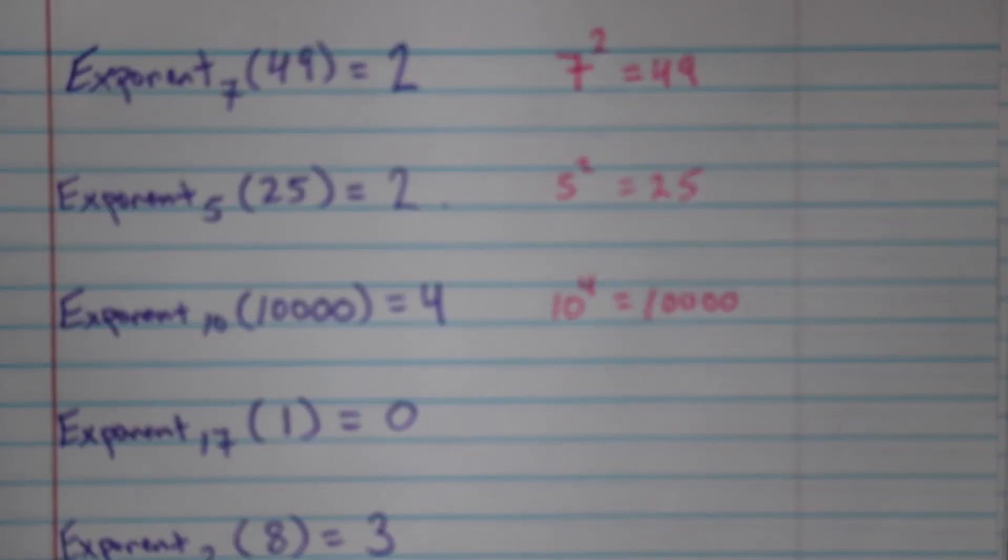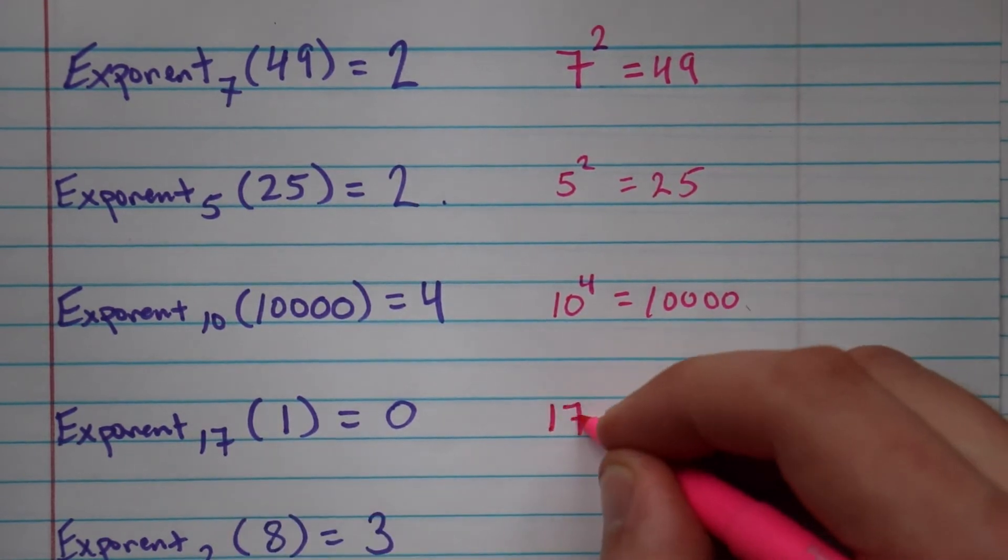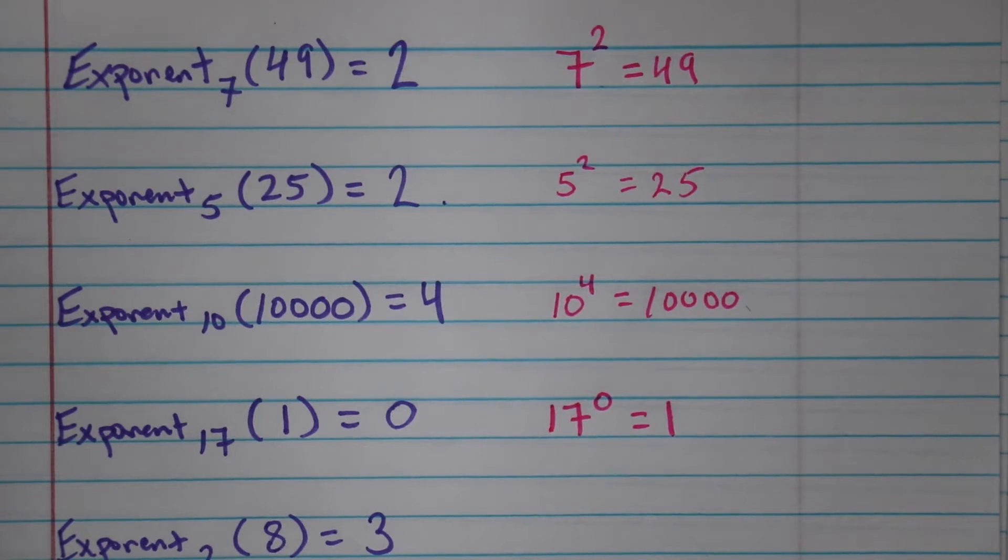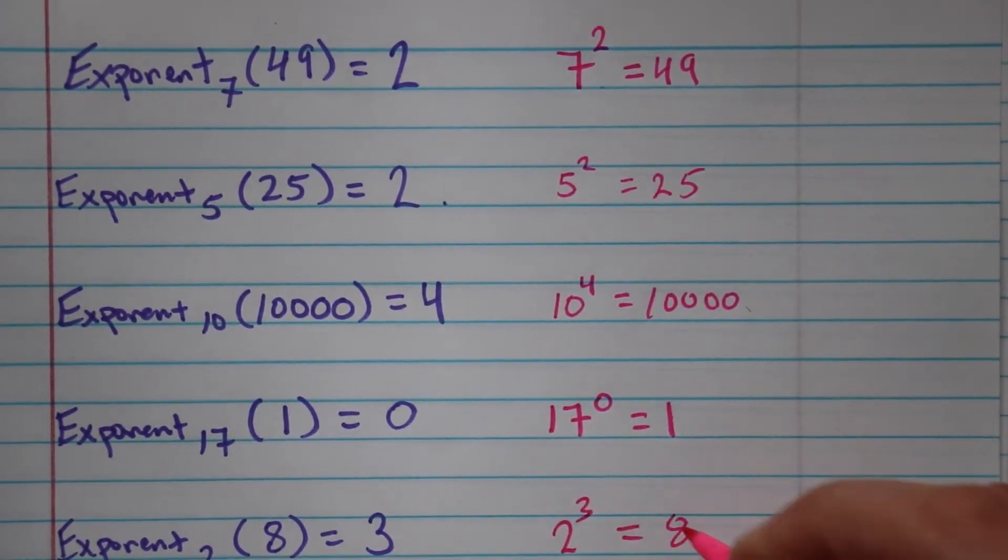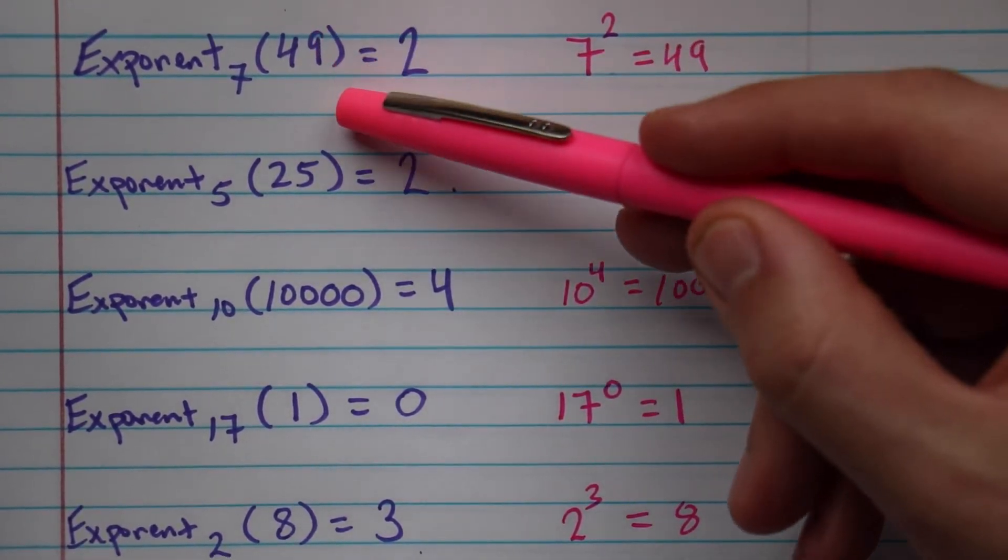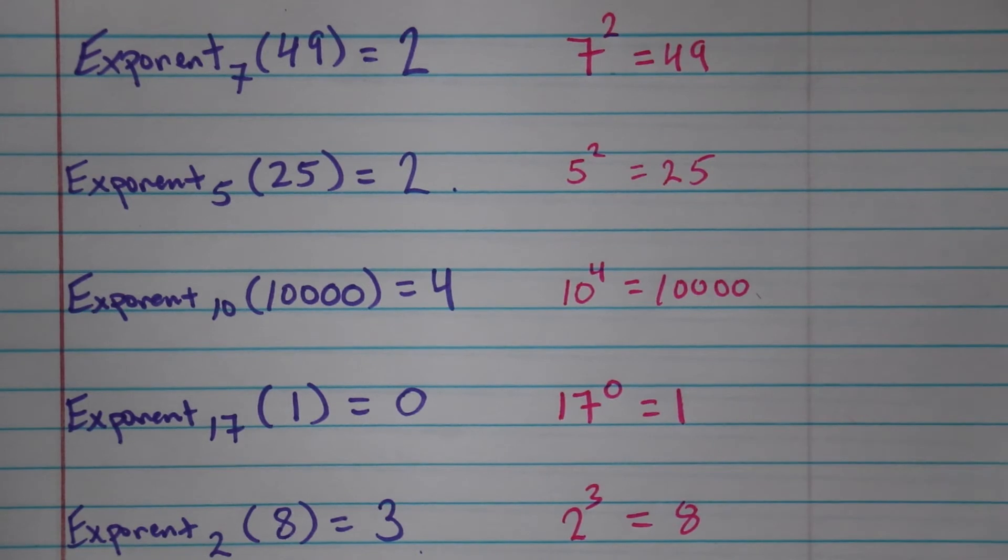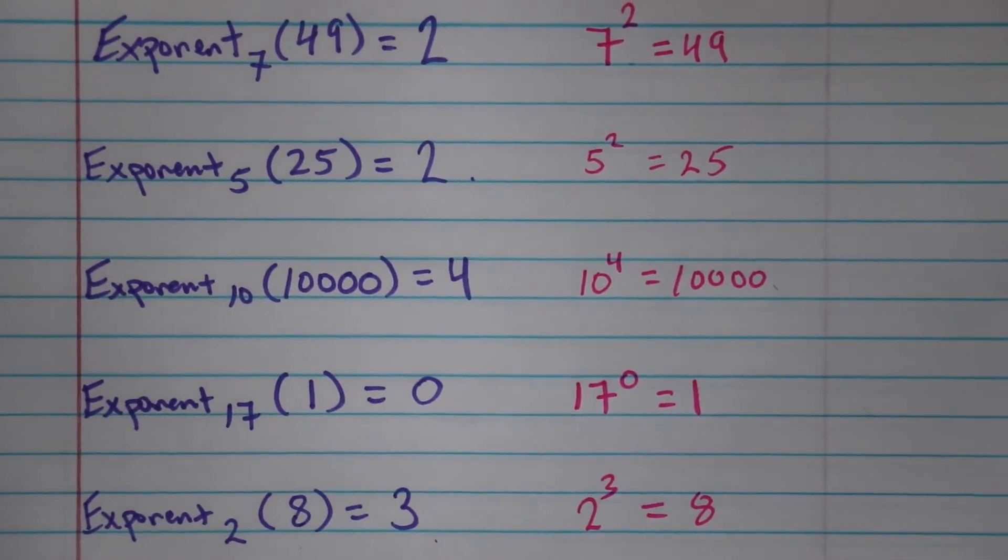Exponent base 10 of 10,000 equals 4 because 10 to the fourth is equal to 10,000. Same thing here. Let's just keep following this pattern. That means that we've seen that 17 to the 0 power equals 1, and 2 to the third equals 8.